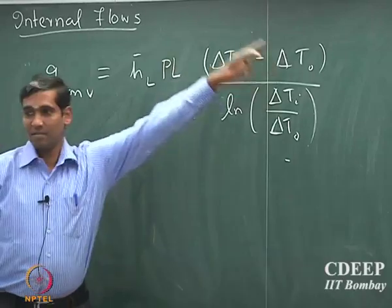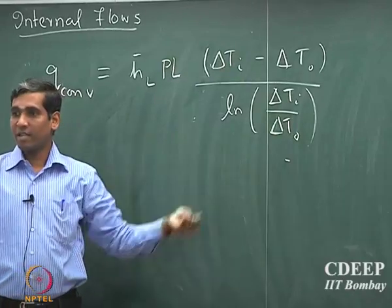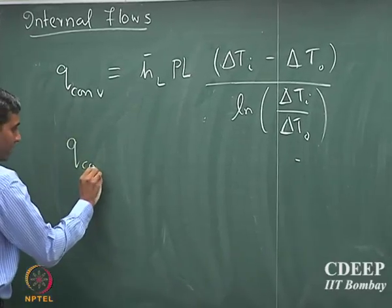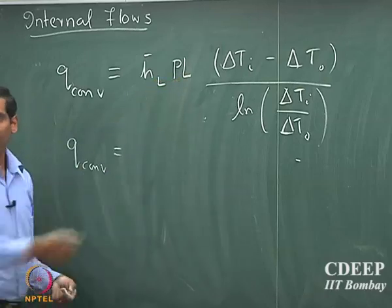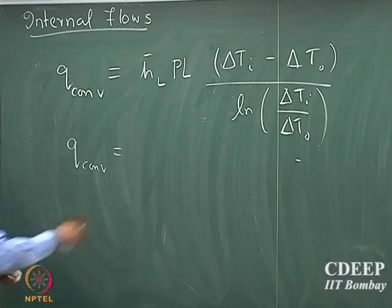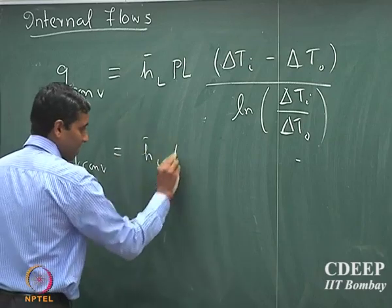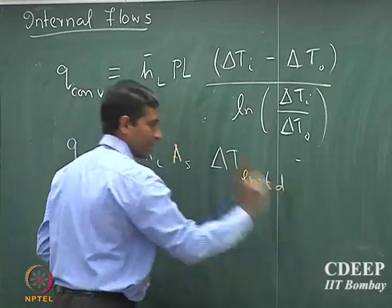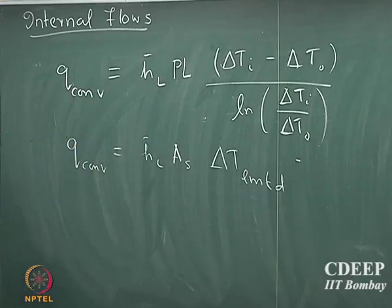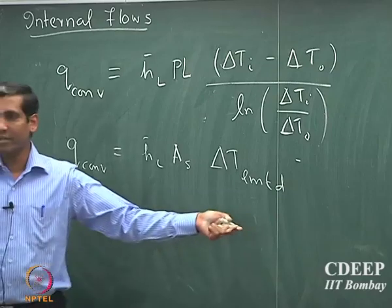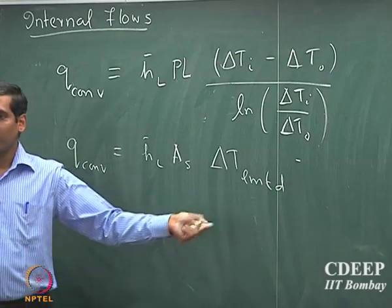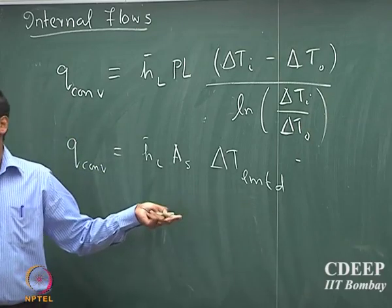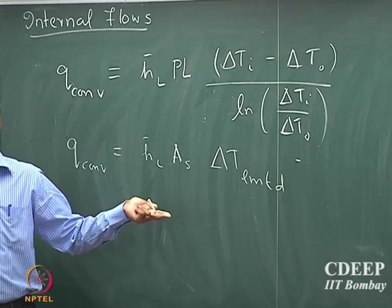What is this expression? This is the log mean temperature difference. Q_convection equals h̄L into the curved surface area into delta T_lmtd. It is not just a magic that you use log mean temperature difference in your calculations — it is actually a rigorous analysis that shows that is the correct temperature difference to use for heat transport calculations.